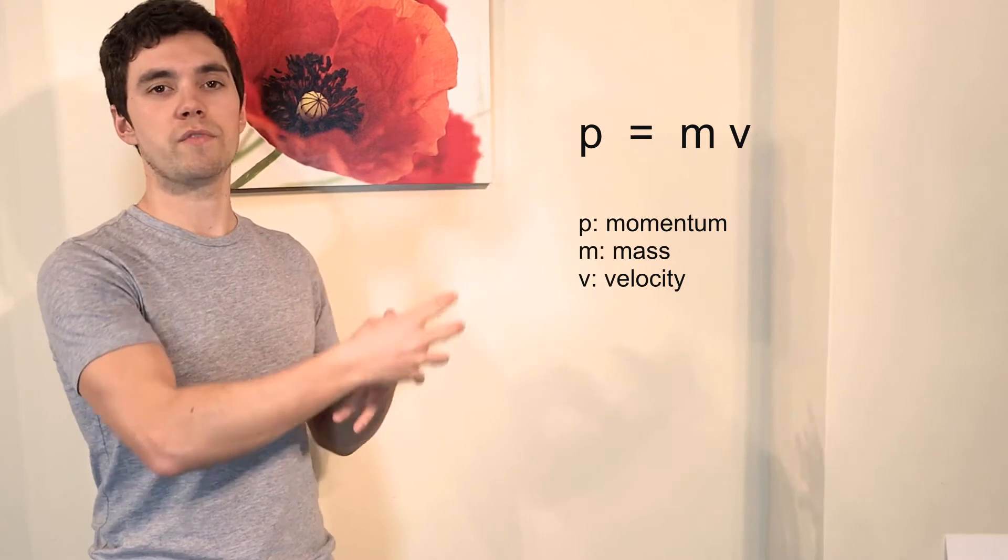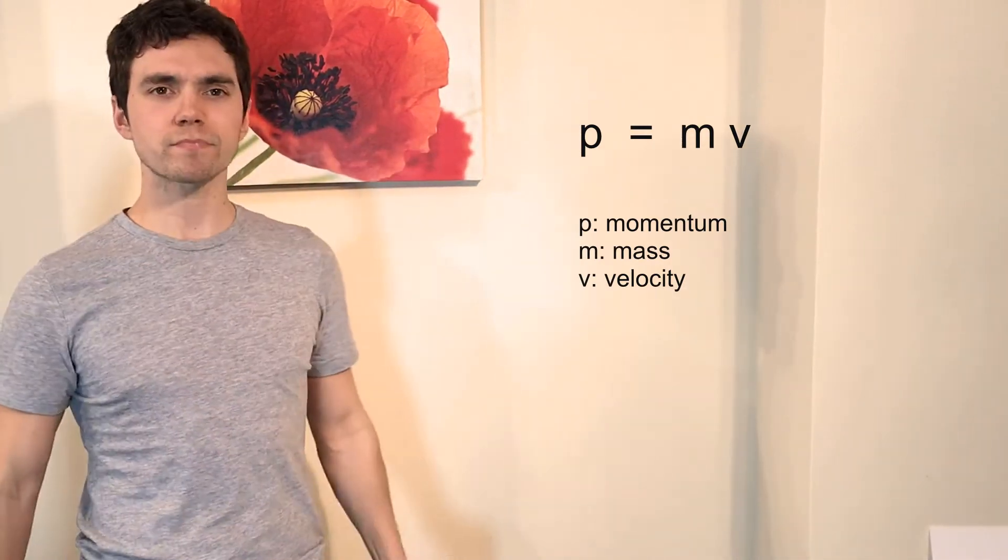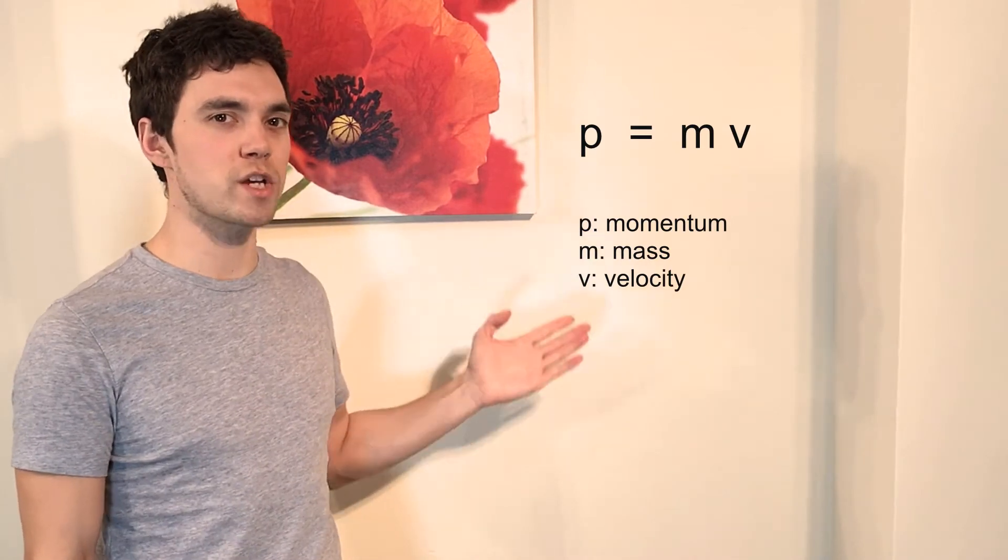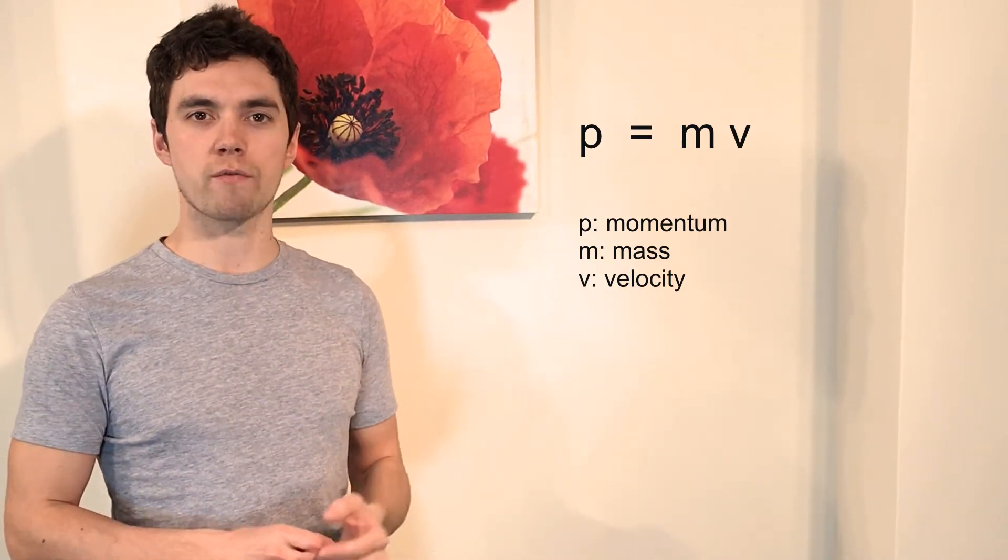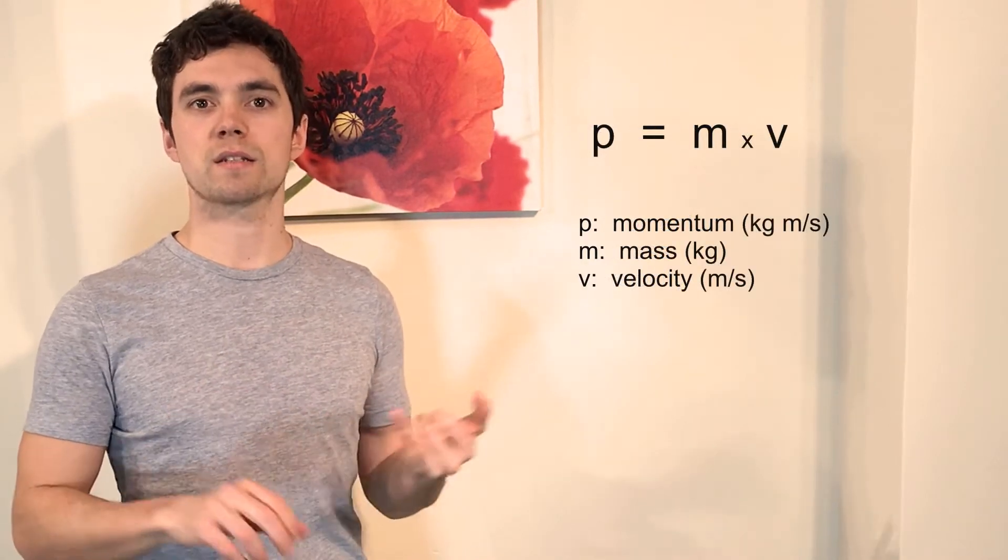Now we're going to dive deeper into what those two terms mean in another video - the mass and the velocity. We're going to focus on the p. Clearly from this equation, the way that we derive what p is is by multiplying the mass and the velocity of an object.